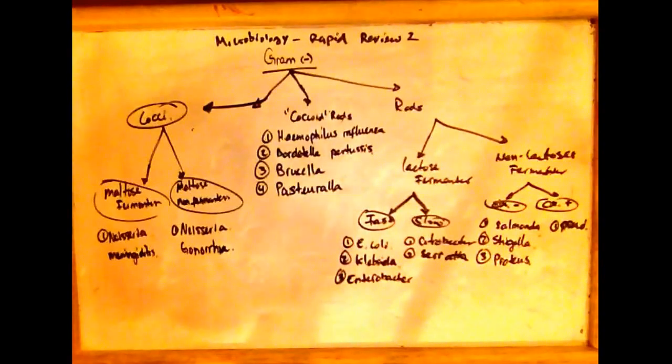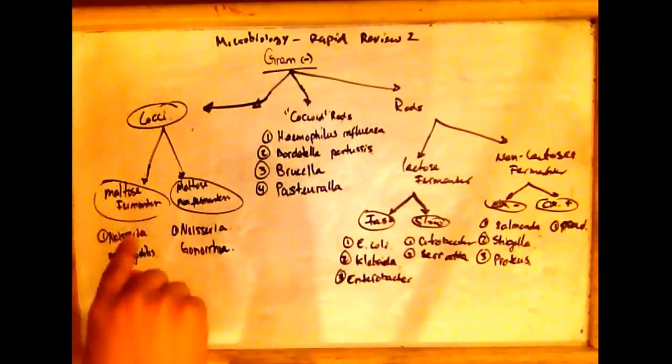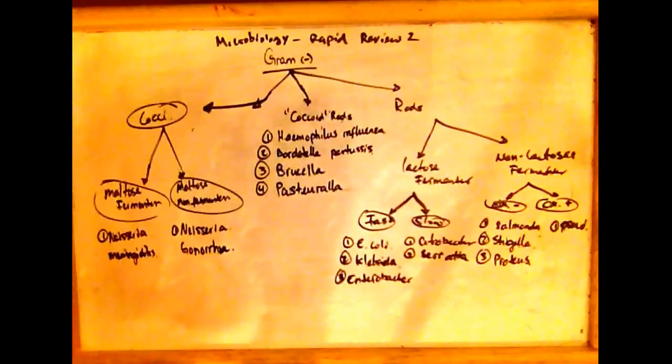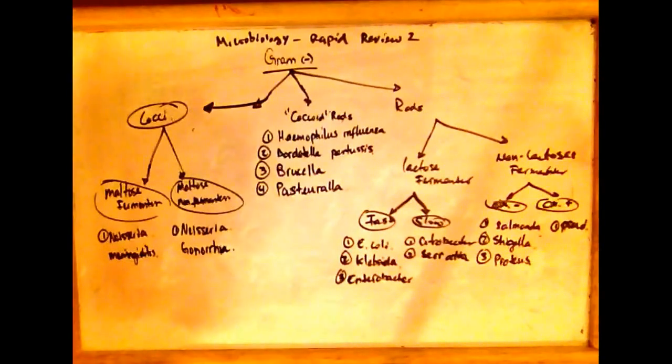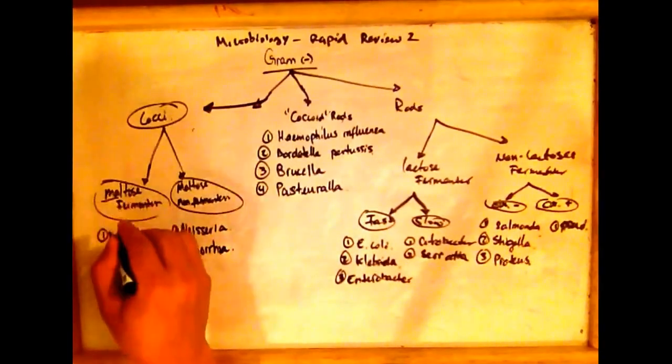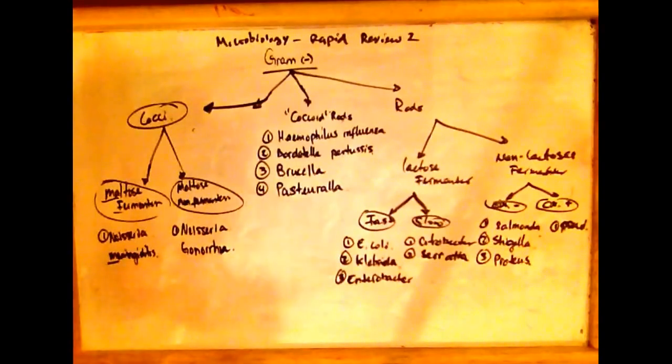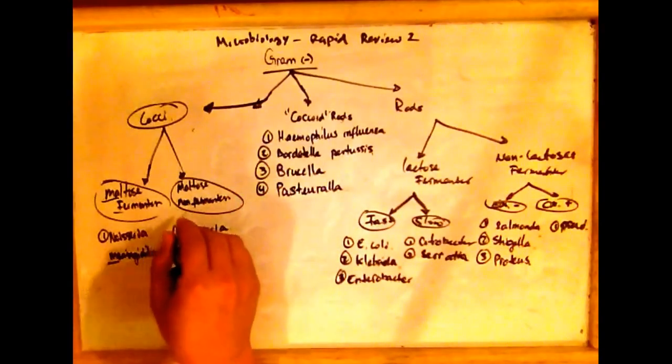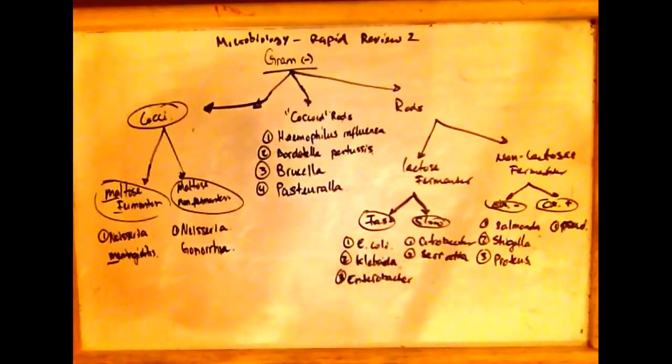So in cocci, we have Neisseria. There are two types of Neisseria in here. To differentiate between the two, we need to see if they are fermenting maltose. Maltose fermenters are Neisseria meningitidis. So just have to remember if it's maltose fermenting, then we have meningitidis. If it's non-maltose fermenting, then it's Neisseria gonorrhoeae.